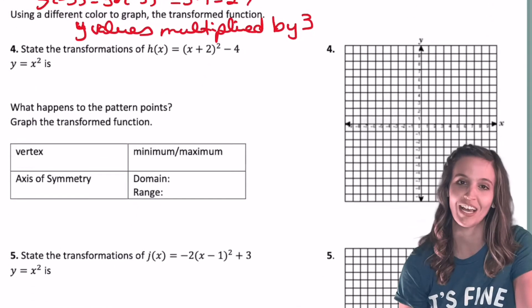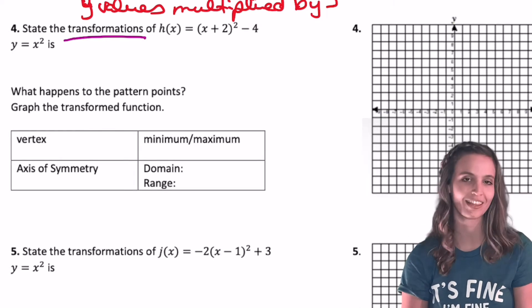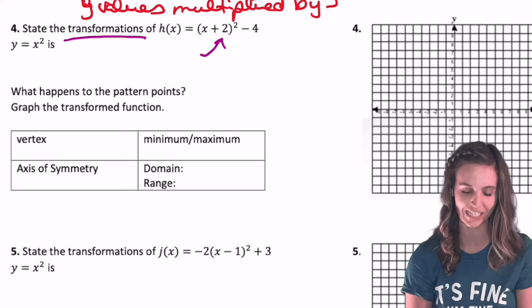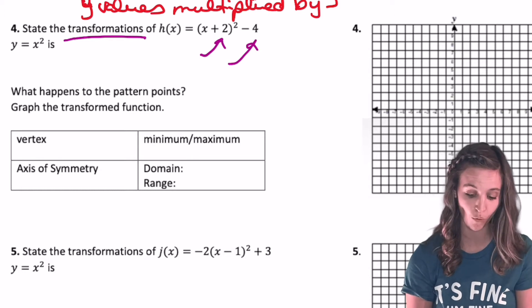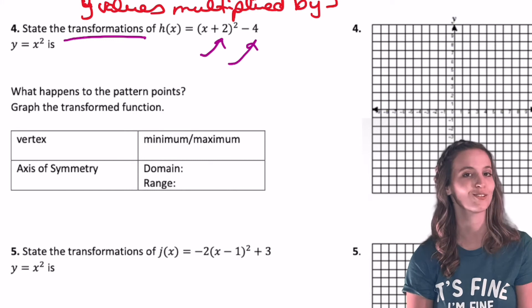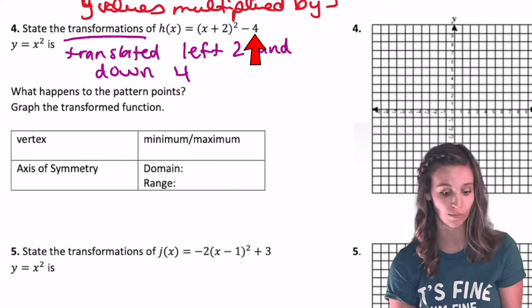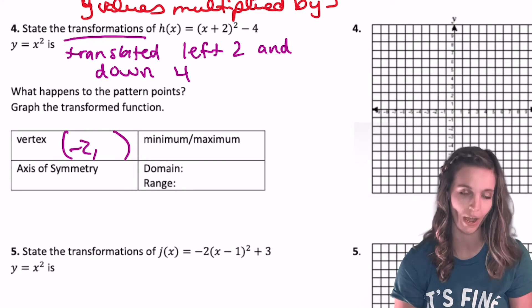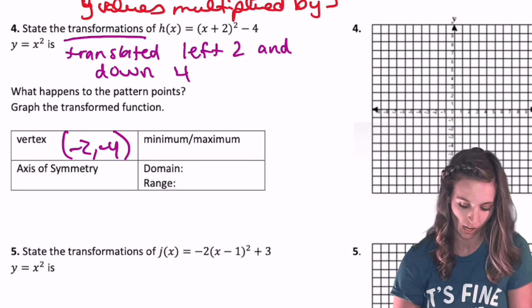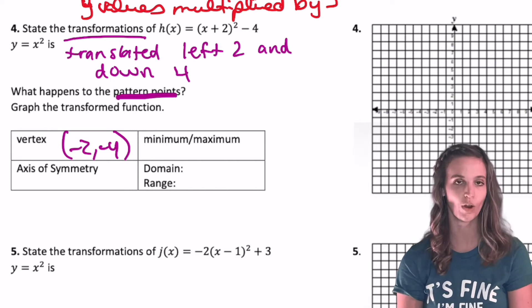Let's graph h of x equals x plus 2 squared minus 4. That looks really familiar. So first, we're going to state the transformations. That plus 2 is inside with the x. So I know that's a translation left 2. That minus 4 is outside. So I know that's a translation down 4. Now remember, inside opposite, outside same. So I could go fill in the vertex right now. Inside opposite, so negative 2. Outside same, so negative 4.